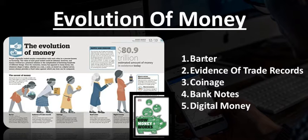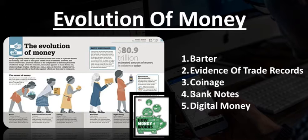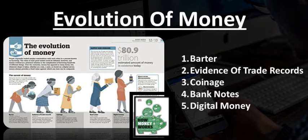Obviously, that system started to evolve. As we advanced in time, we developed coinage. Coinage is basically the beginning of actual money. As time went on, we then developed banknotes, which is paper money — so from coinage to banknotes, which is the beginning of paper money. And now in the digital age, of course, we now have digital money on top of banknotes.